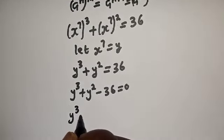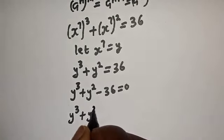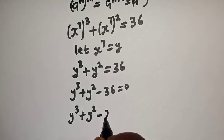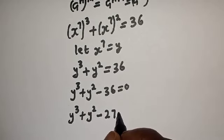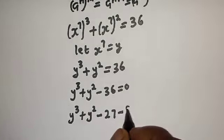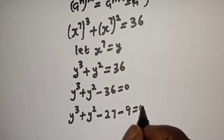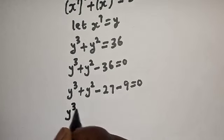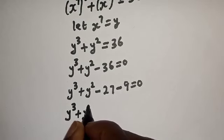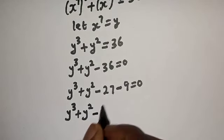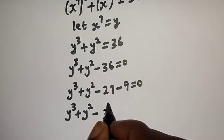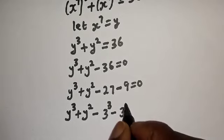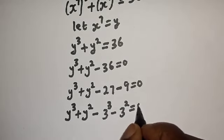y cubed plus y squared minus 36 equals 0. We can split this as y cubed minus 27 plus y squared minus 9 equals 0, since 27 is 3 cubed and 9 is 3 squared, setting up for factoring using standard algebraic identities.